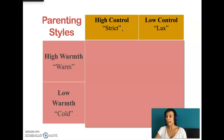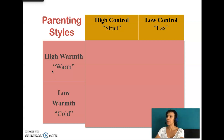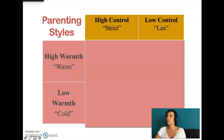The dimension of responsiveness, which is about warmth and engagement, means that parents differ in how emotionally warm, close, caring, involved, and responsive to the needs and development of their child they are. Along the dimension of demandingness or control, parents may be very demanding, maintaining tight control over all aspects of their child's life, or they may be more lax. So strict versus lax, as well as warm versus cold.